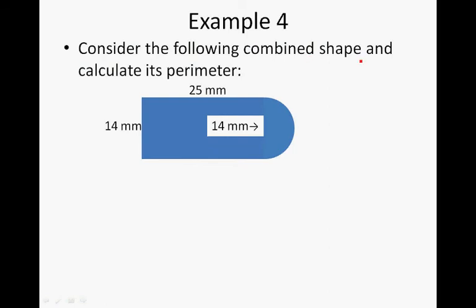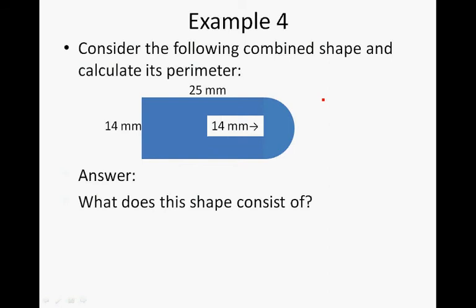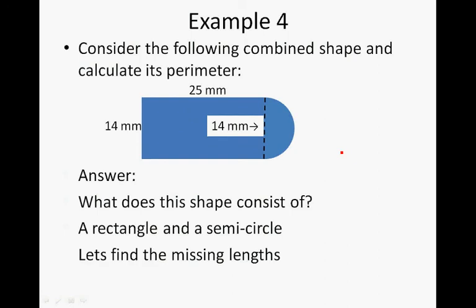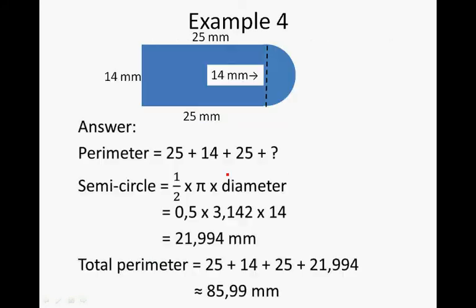Consider the following combined shape and calculate its perimeter. What does this shape consist of? That's right, a rectangle and a semicircle. Let's find the missing lengths. If this is 25, that should be 25 too.